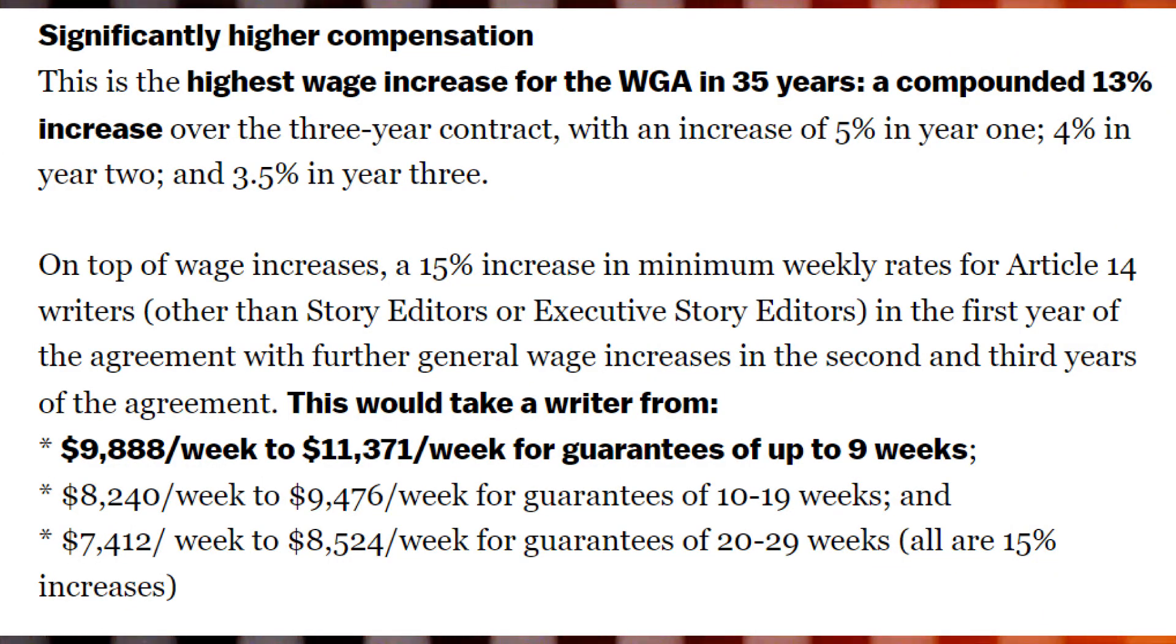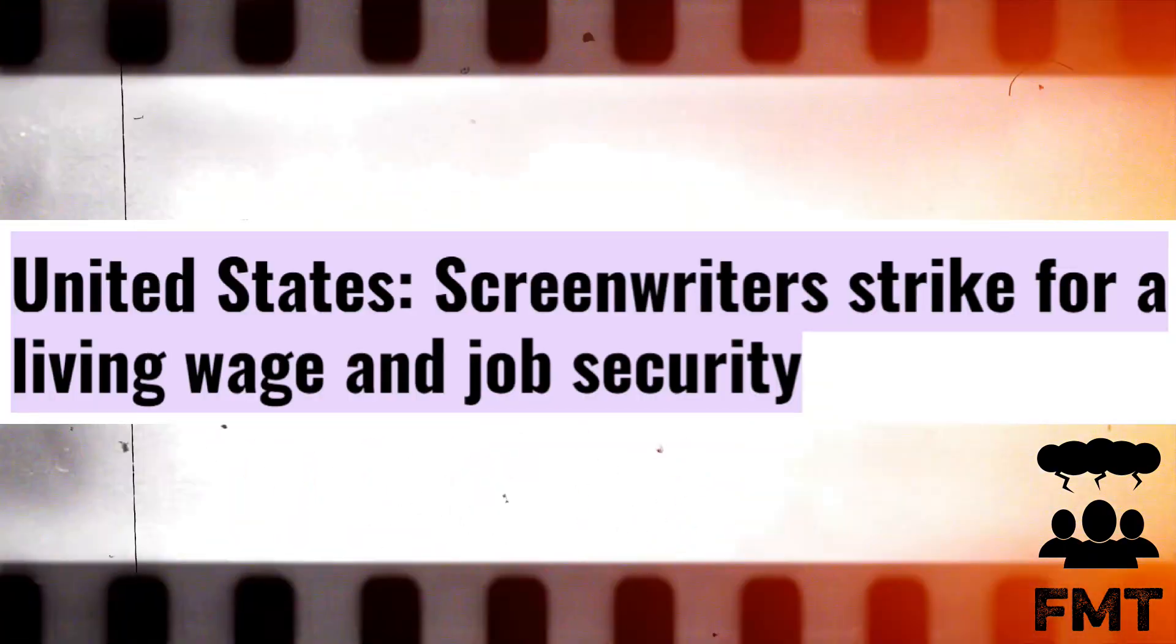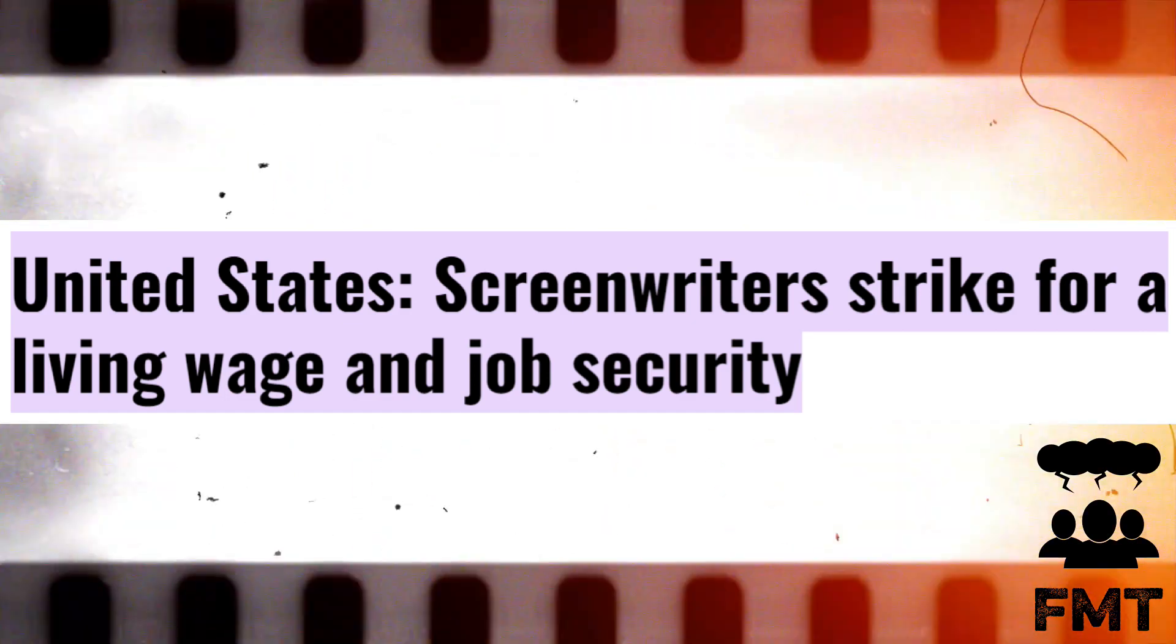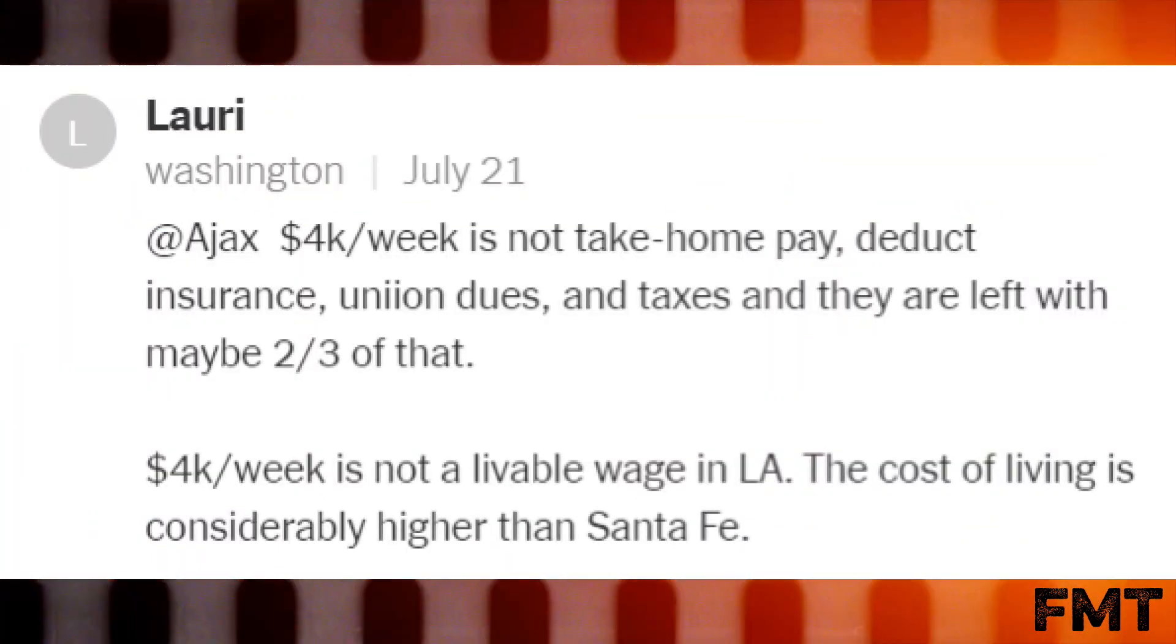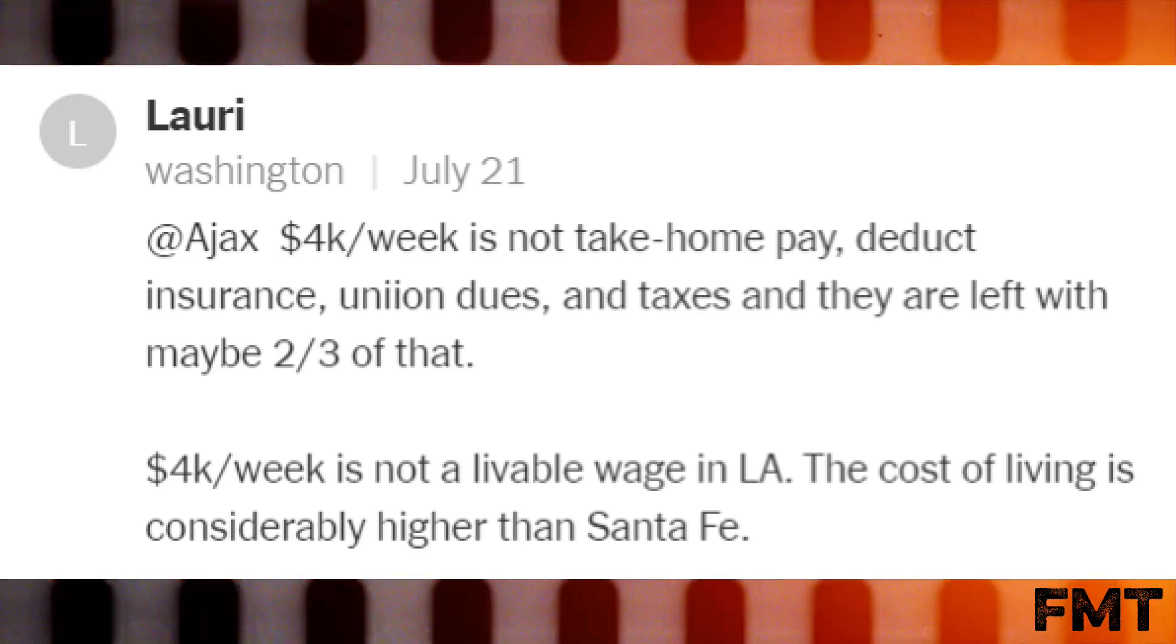They continue on. The pay increase will go from $8,200 a week to $9,400 a week for a guaranteed 10 to 19 weeks. Furthermore, it will increase from $7,400 a week to $8,500 a week for a guaranteed 20 to 29 weeks. Across every tier, that's a 15% increase. Now remember what the writers were saying when this strike first started? They wanted a livable wage.